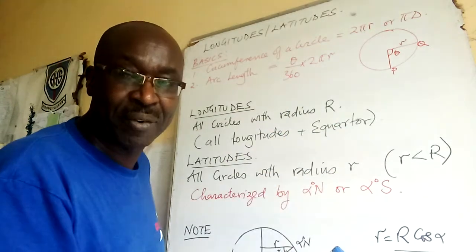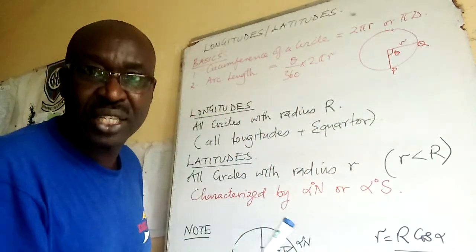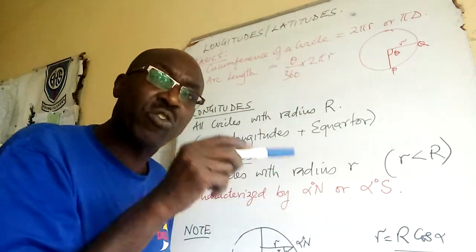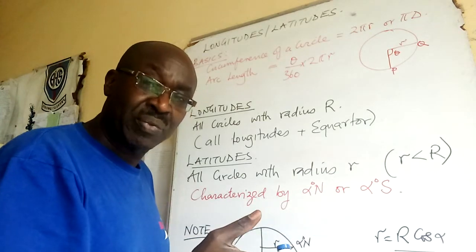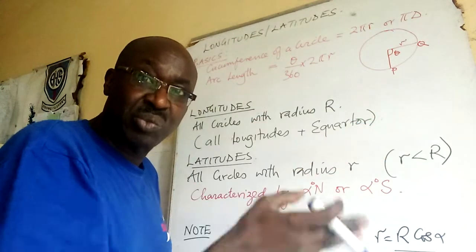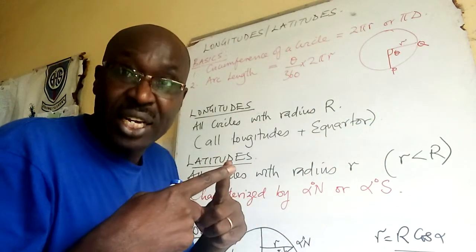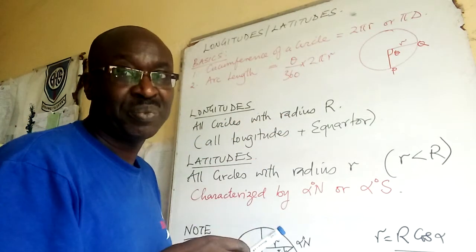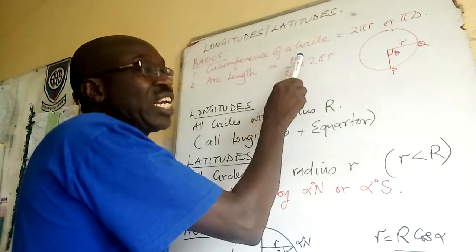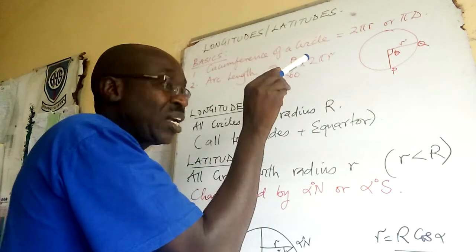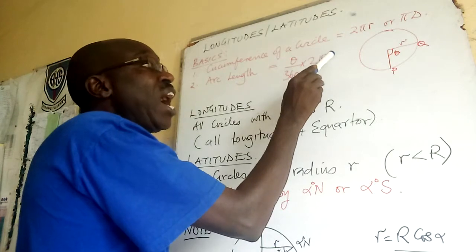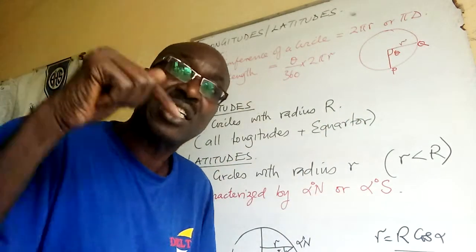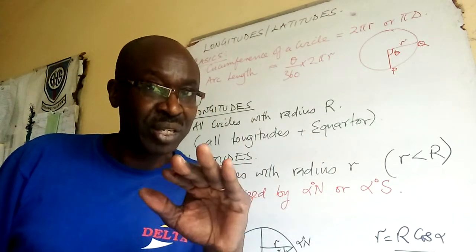The second basic tool is arc length. Arc length is defined by the angle subtended at the center of that circle — it doesn't matter whether it is a big circle or a small circle. Arc length equals the angle subtended at the center over 360, times 2πr, where r is the radius of that particular circle.